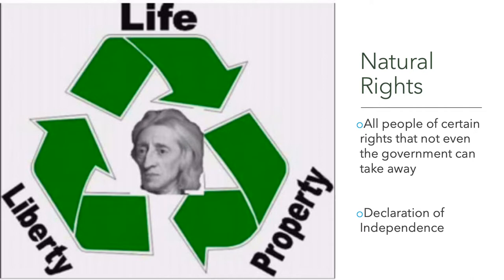Thomas Jefferson, when he wrote the Declaration of Independence, changed it to life, liberty, and the pursuit of happiness. The joke was he took out property because arguing for property doesn't sound as great as the pursuit of happiness when you're trying to inspire people to rebel. But these are certain rights that the government should never take away, and if they start taking them away, you can invoke that social contract and rebel.